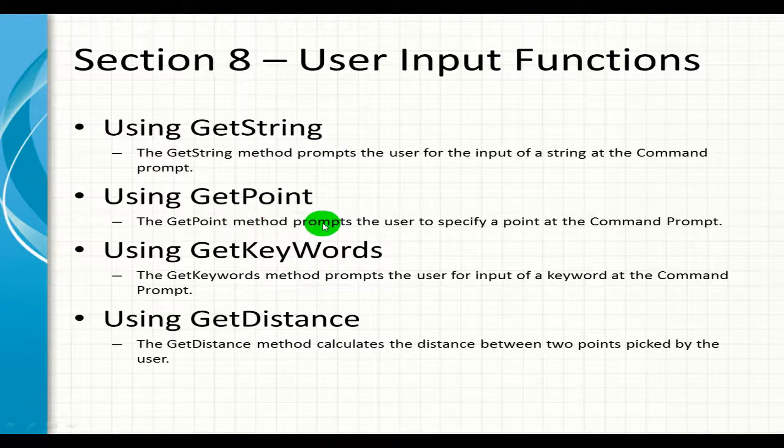GetPoint is a method to prompt the user to specify a point at the command prompt. And getKeywords prompts the user for input of a keyword at the command prompt.